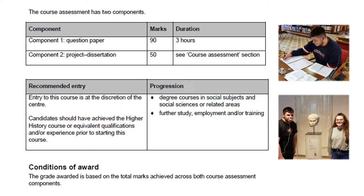Advanced Higher History is split into two component parts. Firstly, the question paper is a formal exam the pupils will sit in the May exam diet, and it consists of two essays and three source questions which they have three hours to answer. The second component is the project dissertation. This is a year-long project that the students work on throughout the course of the year from September through to April, when they return from the Easter holidays they must produce a final draft to be printed and posted to the SQA.